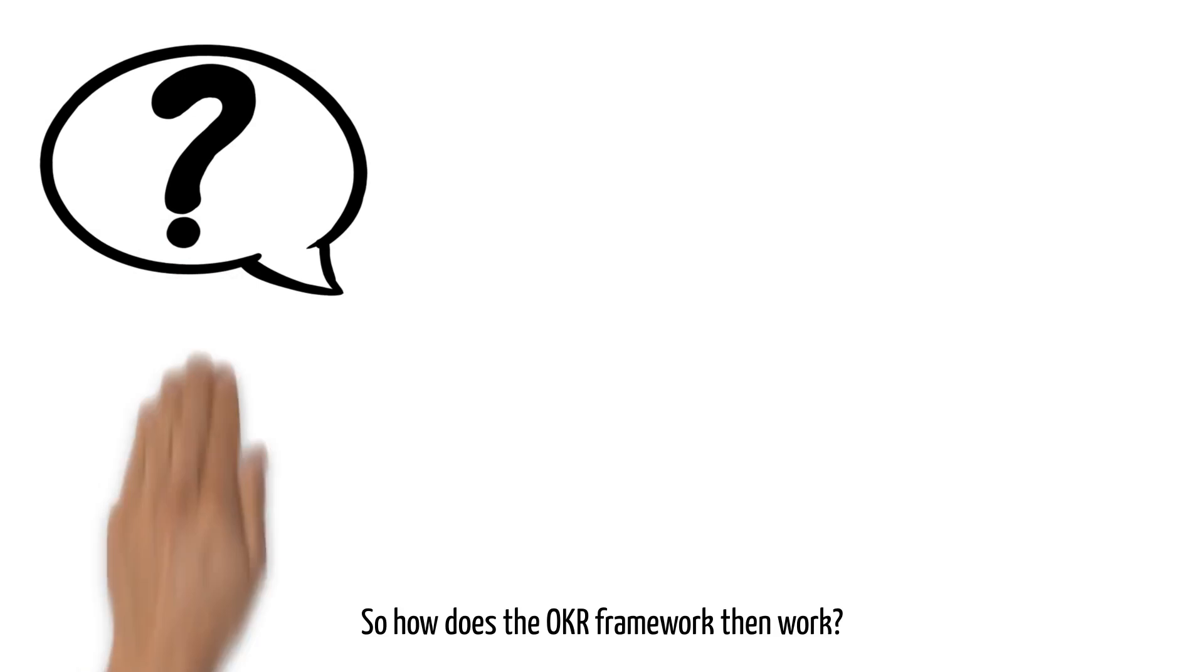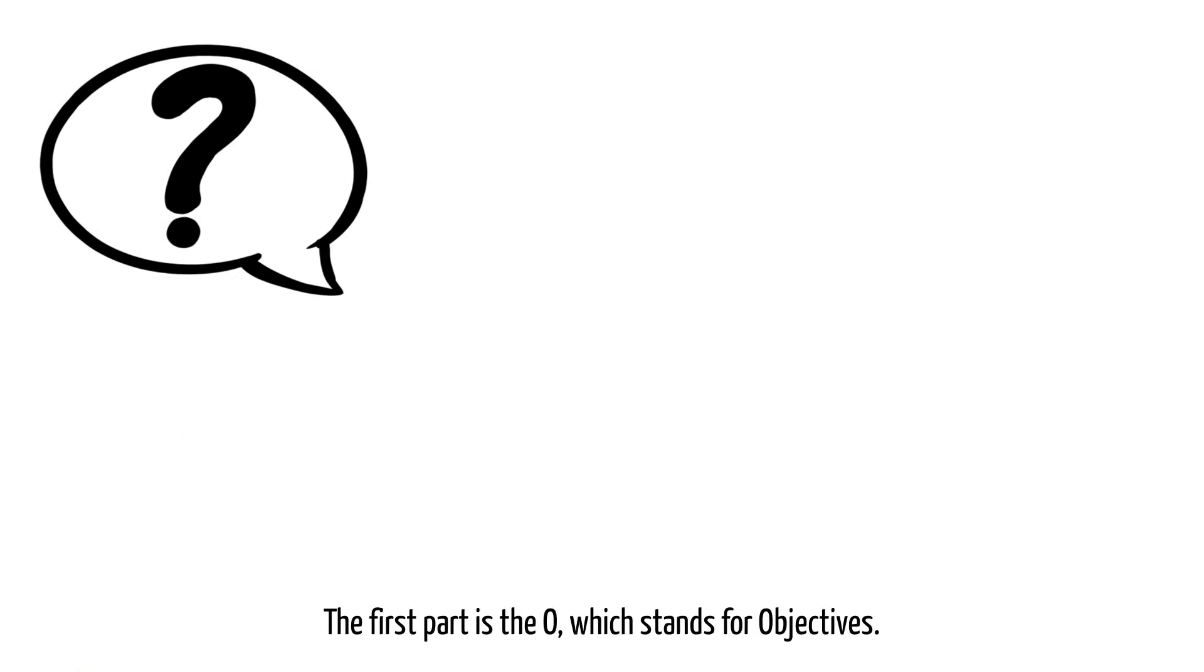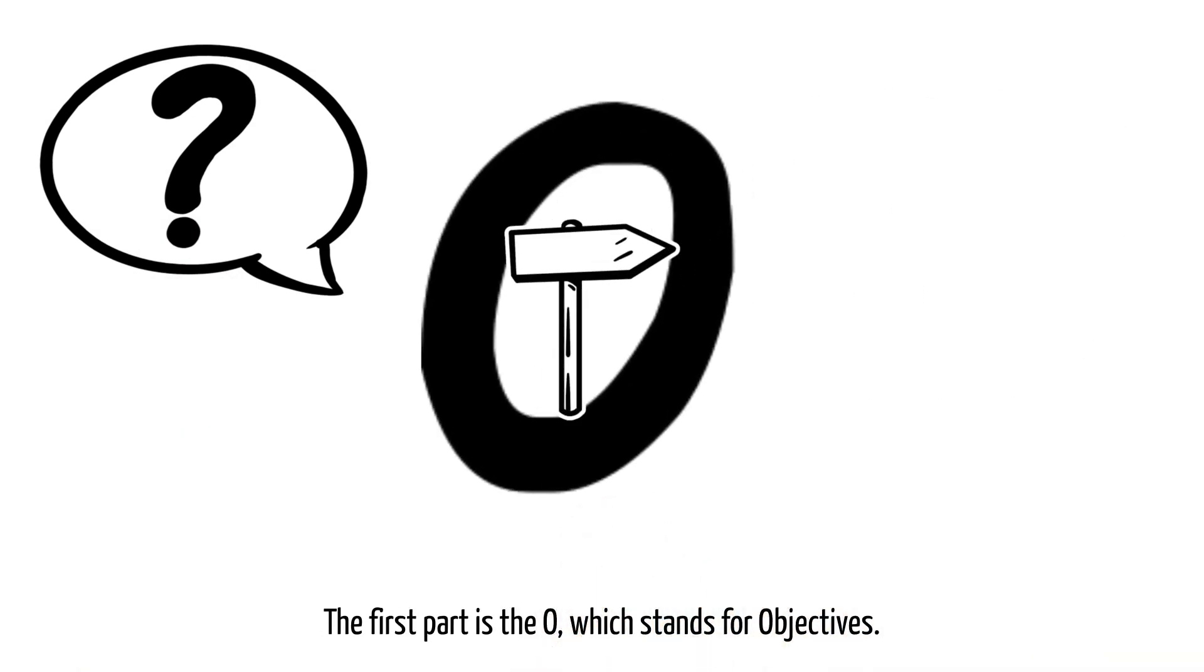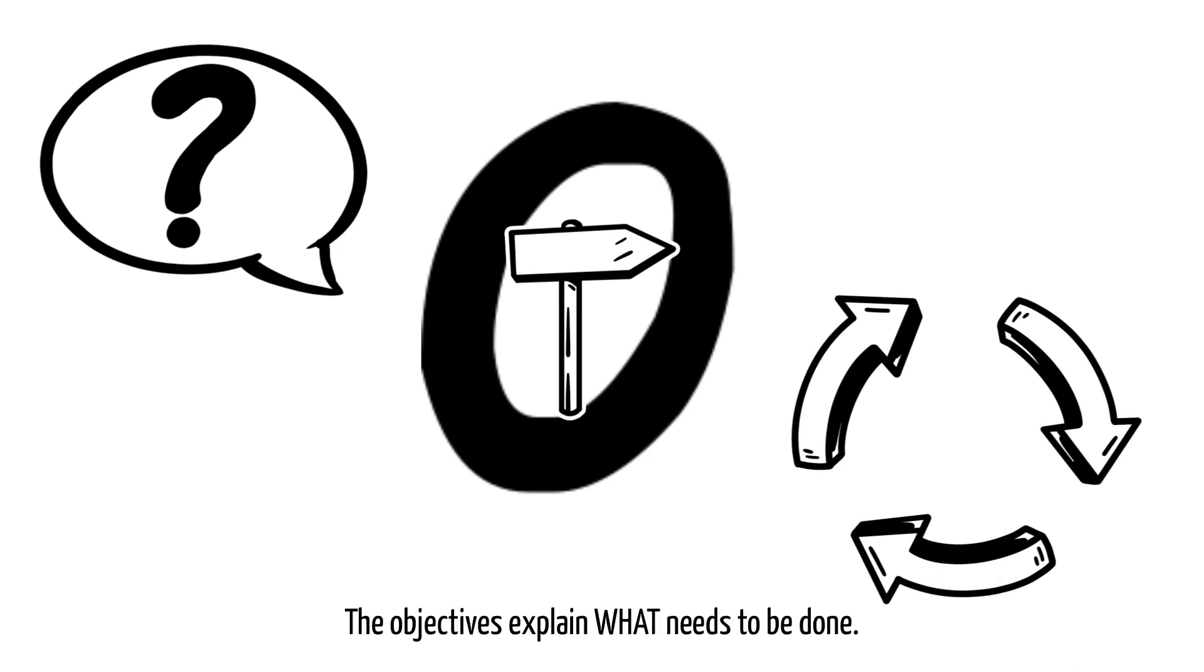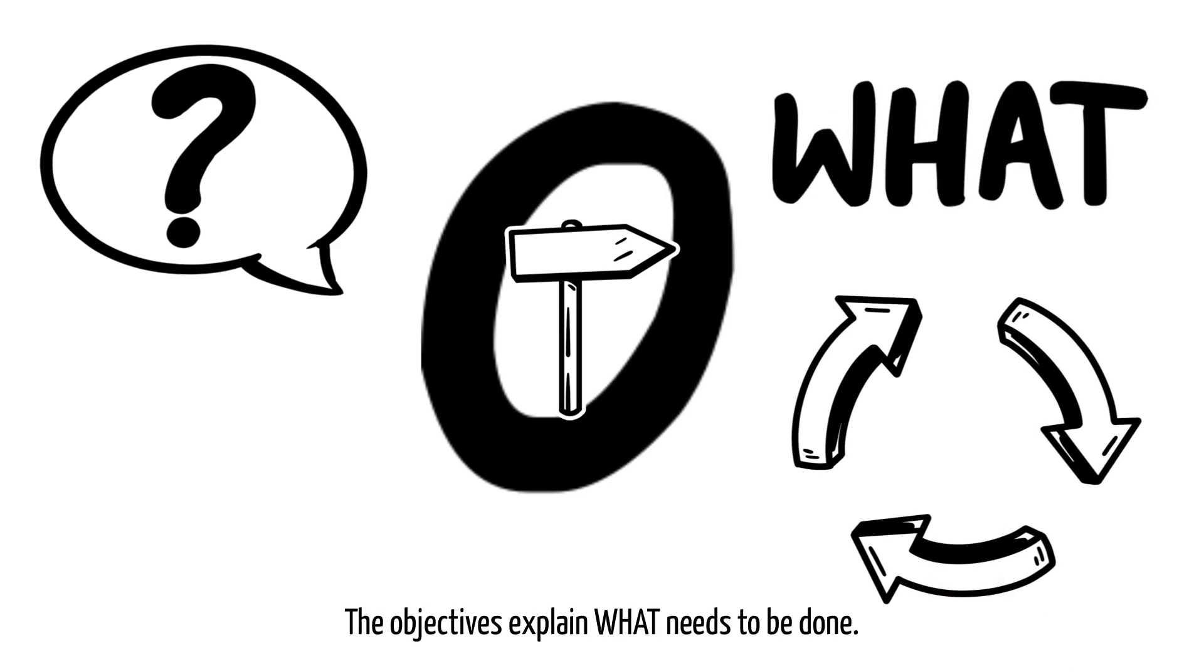So how does the OKR framework then work? The first part is the O which stands for objectives. The objective should be the answer to the question, what do I want to achieve by the end of the cycle? The objectives explain what needs to be done.